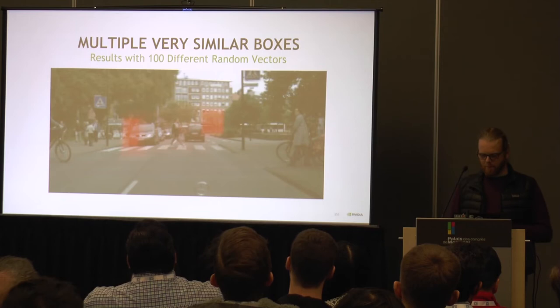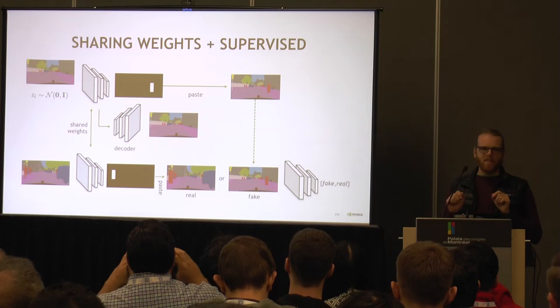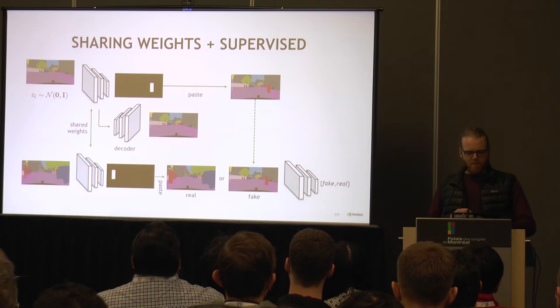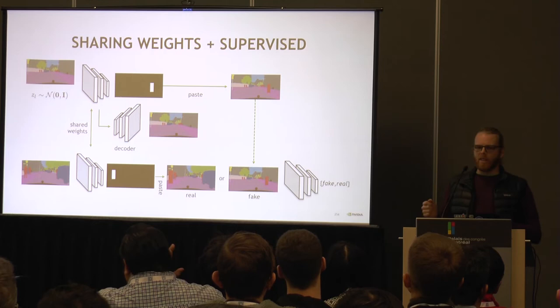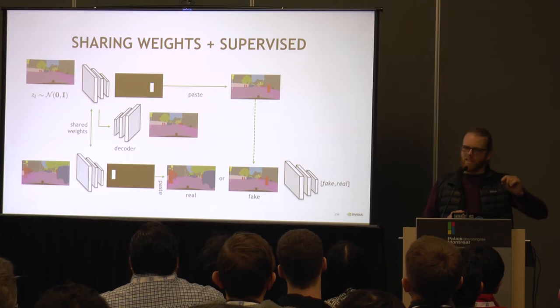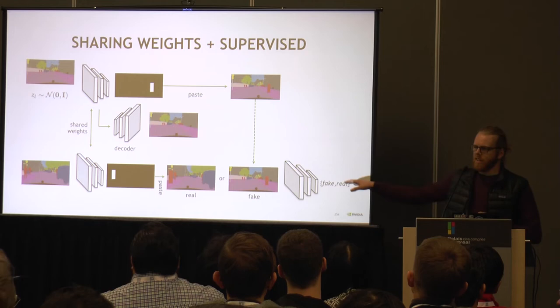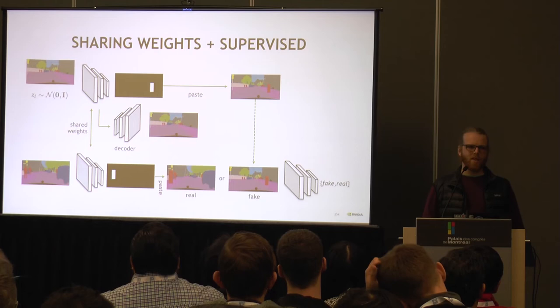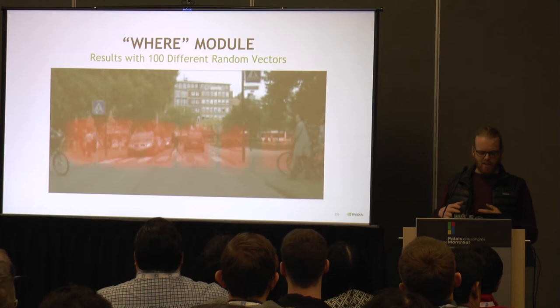So we introduced a supervised component. The way we generated real images before was to take an image, find a silhouette, apply a 2D bounding box on top of the silhouette, and then train our discriminator. We can think about this process as what we're trying to achieve at the top — so instead of doing it manually, we have the neural network achieving that task itself. We share the weights and force the network to output these 2D bounding boxes with a supervised loss. With supervised learning, the generative adversarial network, and the autoencoder all put together, we can now achieve a nice variety of 2D bounding boxes on the image where pedestrians are placed on the sidewalk.